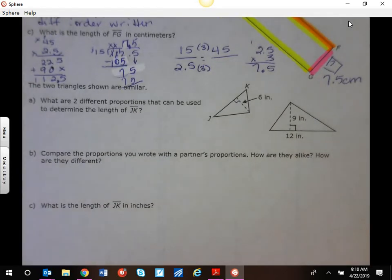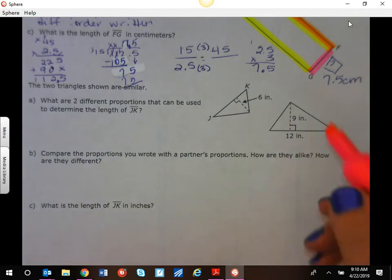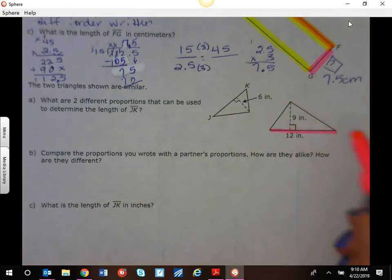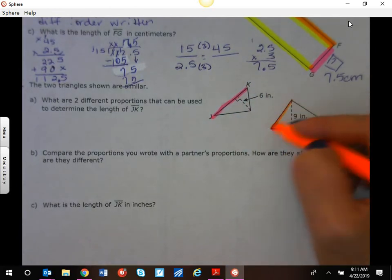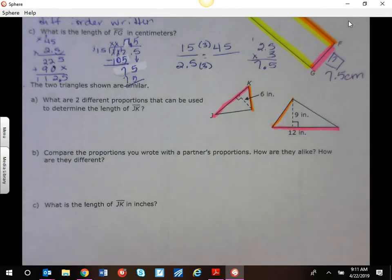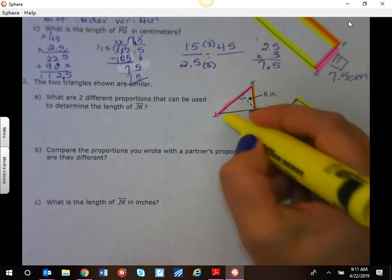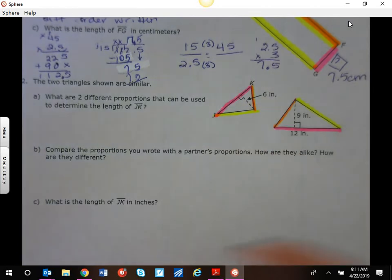Again, find the sides that match. They are similar. So we know that this is where the right angle is. This is our base, so it matches there. We have a shorter side and then we have a longer side. So if you want, you can use the colors to mark them.